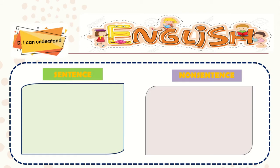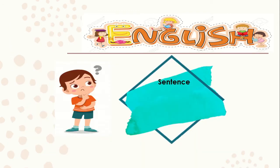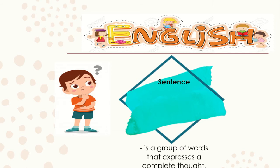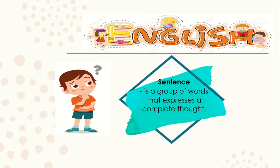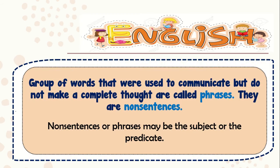Based on the activity given, do you know what is the difference between a sentence and a non-sentence already? Very good! Let us first identify what a sentence means. When we say sentence, it is a group of words that expresses a complete thought. A sentence also begins with a capital letter and ends with a period, exclamation mark, or a question mark. Now that you know what a sentence is, let us now determine what a non-sentence is.